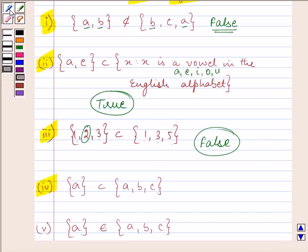Next, it says that {a} is a subset of {a, b, c}. So as we can see that a is present in both these sets, therefore it is a true statement as this is a subset of this set.